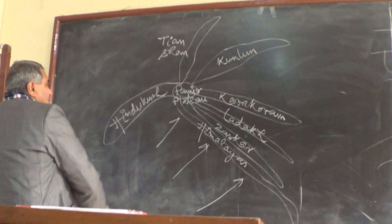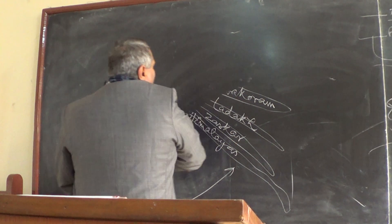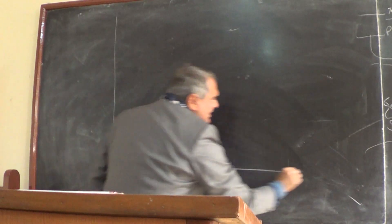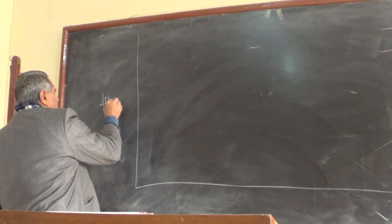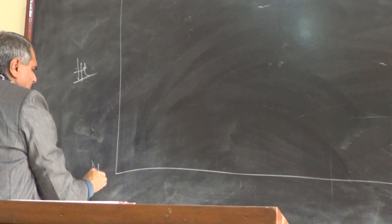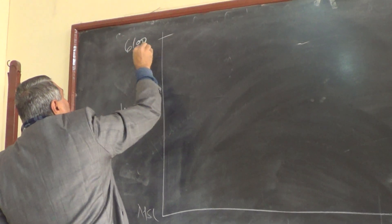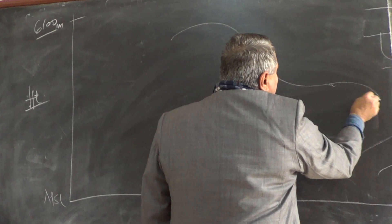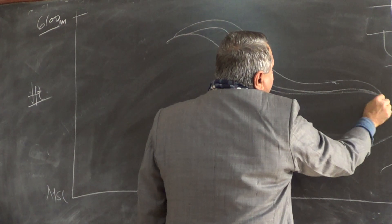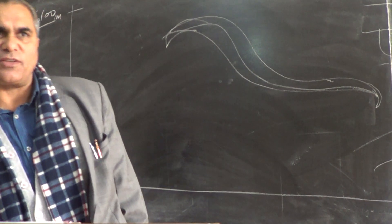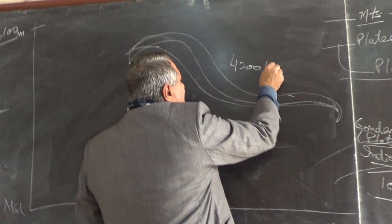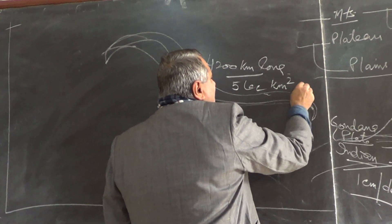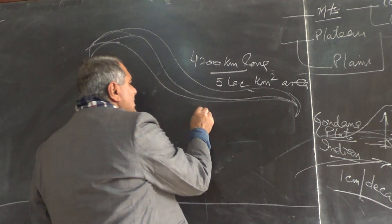Now come over to the Himalayan system. If I construct a graphical presentation of the Himalayan system — suppose this is the height, average height is 6,100 meters MSL — the Himalayan system is a sword-shaped system. It is 4,200 kilometers long and covers 25,000 square kilometers in area, having three parallel ranges.